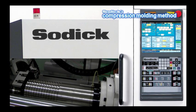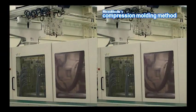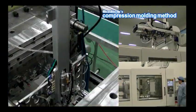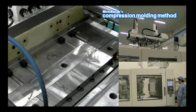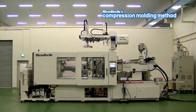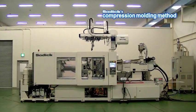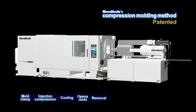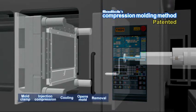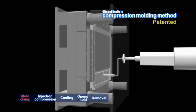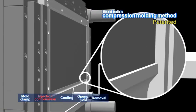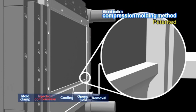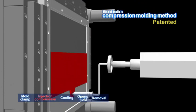Sodic's compression molding system, which solved such problems with the conventional method, achieved low-cost, energy-saving and small size. The most distinctive feature of Sodic's compression molding system is the expansion of the space in the mold and allows the filling of resin at low pressure and low temperature.